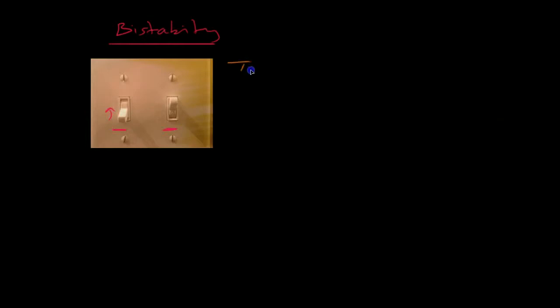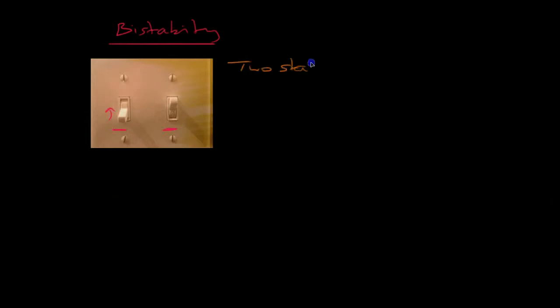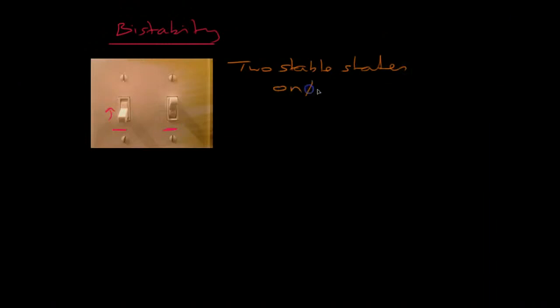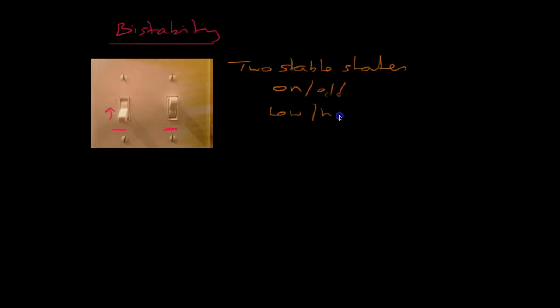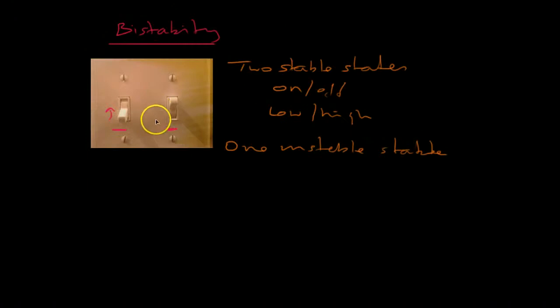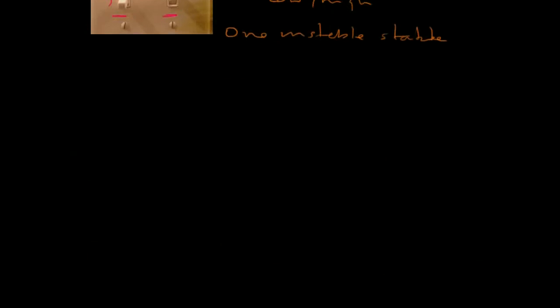And that's one of the characteristics of bistability. So, a bistable system has two stable states, which we can call on and off, and also low and high, and one unstable state. So, how can we make one of these bistable systems, say, using a genetic network?